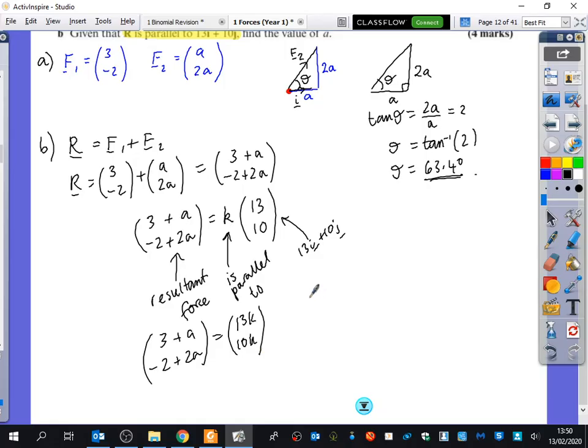Simultaneous equations. From the I part, the top part, I get 3 plus A equals 13K. From the bottom part, I get minus 2 plus 2A equals 10K.